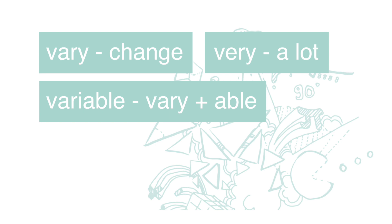"Variable" is "vary" plus "-able", meaning changeable — it can change. That is because the value of a variable can change: it can be 80 plates, 120 plates, or 200 plates. Because it can change, it is called a variable. Usually we use an alphabet to represent a variable, for example a, b, c or x, y, z.